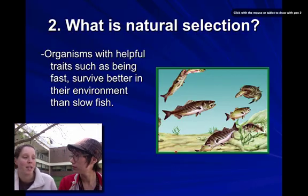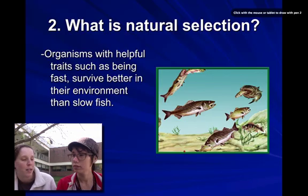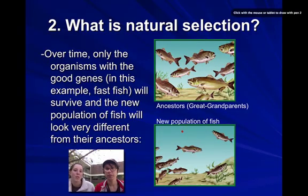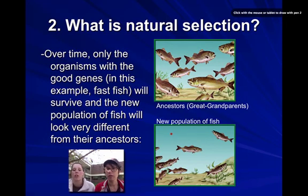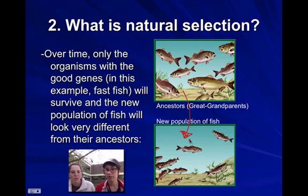Remember, natural selection is when nature picks or chooses. So nature — the environment — is going to pick or choose the organisms that have more helpful traits, more helpful variations. Over time, only the organisms with the good genes are going to be surviving and reproducing. The other ones are going to get eaten or die off. So over time, we can see that the population of fish will change. When I compare ancestral fish to younger fish, I notice they've changed quite a bit in size and shape — they look much leaner and like faster swimmers.